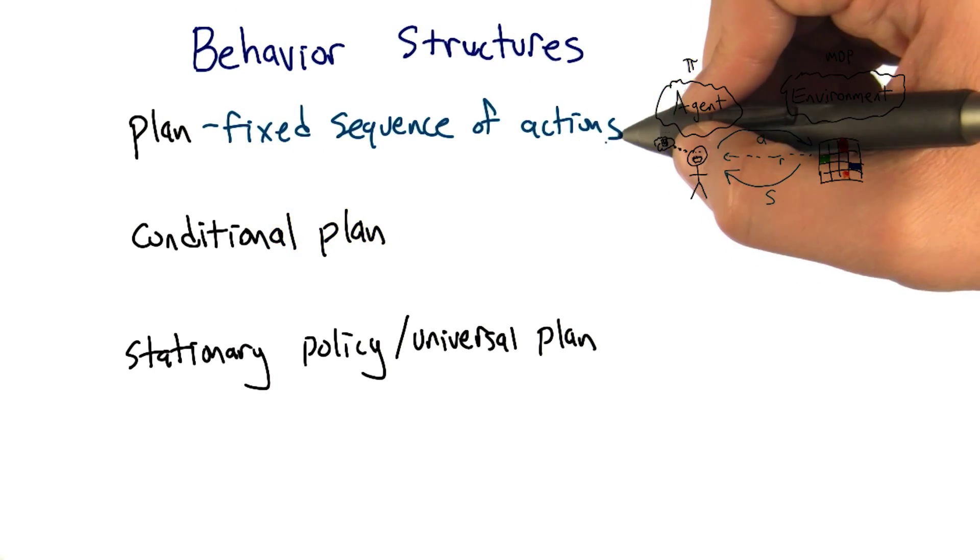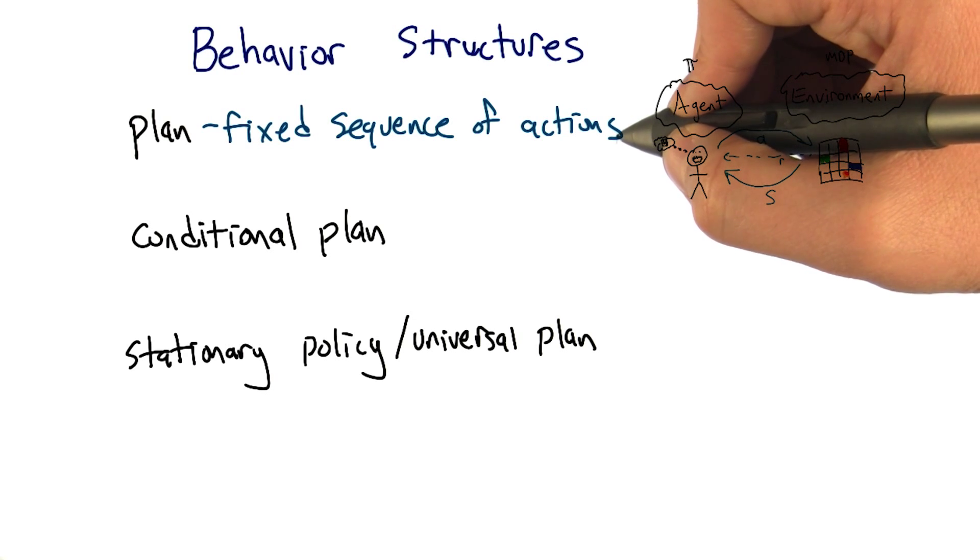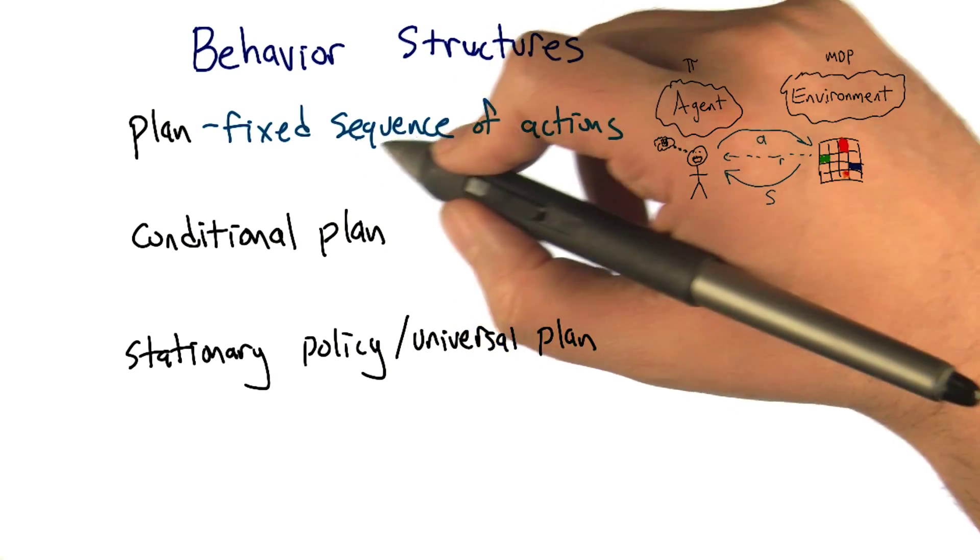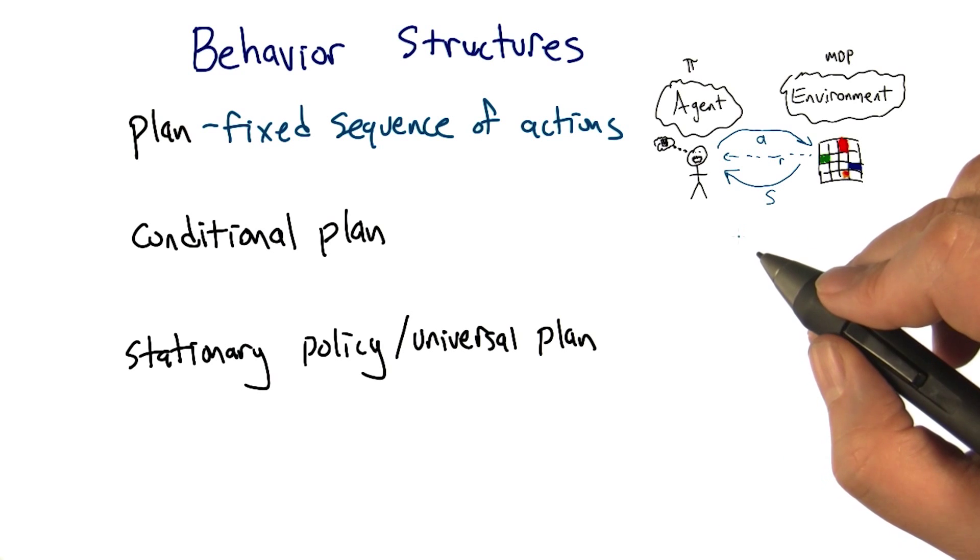So plan usually refers to a fixed sequence of actions, the kind of thing that says, okay, I see where I am now. This is the sequence of things I'm going to do. I'm going to go left, right, up, up, up, down, pick up, left, left, down, down, down, down, down, drop off, something like that.